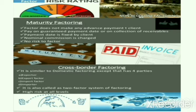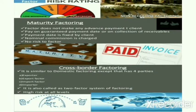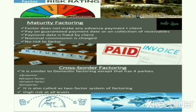Next, moving on to cross-border factoring, which is similar to domestic factoring but involves four parties: an exporter, an export factor, an import factor, and an importer. The exporter enters into an agreement with the export factor in his country and assigns him the export receivables as and when they arise. The export factor then enters into an agreement with a factor in the importer's country, assigning him the task of credit checking, sales ledgering, and collection for a stipulated fee. It is also called a two-factor system of factoring, which involves high risk at all levels.